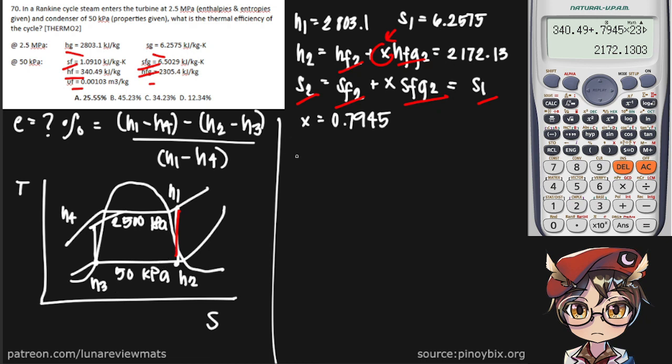Now, H3 is where the steam leaves the condenser and enters the pipe, or rather the pump. So that means H sub 3 is simply equal to HF sub 3, which is equal to 340.49 kJ per kg.